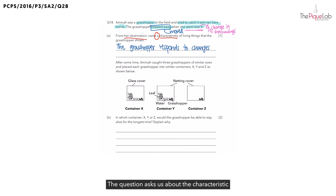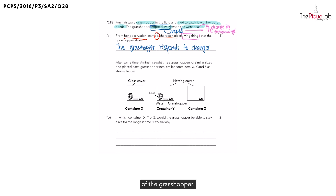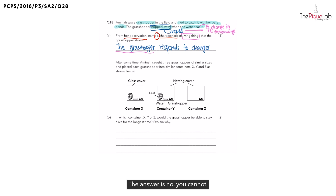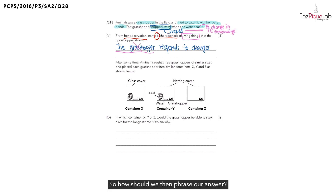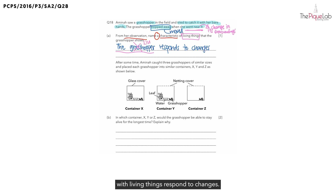The question asks us about the characteristic of living things that the grasshopper shows. The question did not ask about the characteristic of the grasshopper. So can you start your answer with 'the grasshopper'? The answer is no, you cannot. So how should we then phrase our answer? You must start your answer with 'living things respond to changes.' So this is the first mistake.